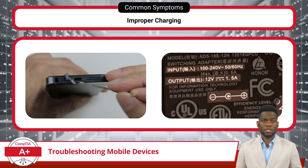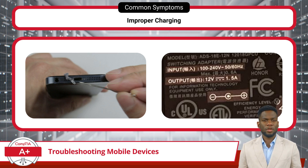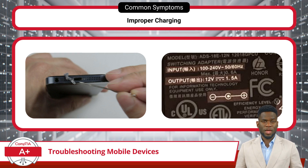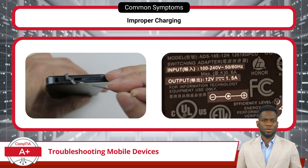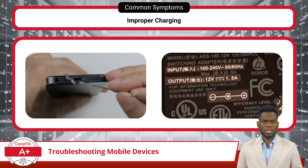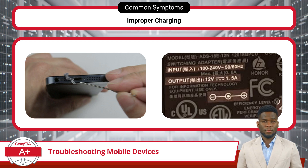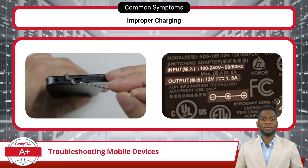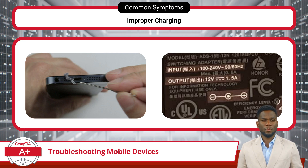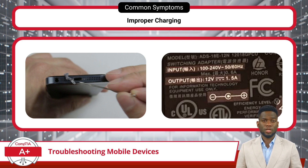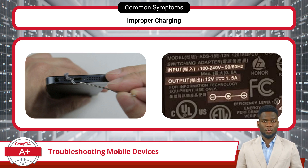Improper charging is a common issue that can stem from various causes. A bad cable presents a significant concern, as damaged or faulty charging cables hinder the flow of electricity from the charger to the device. A poor connection between the cable and the device's port — due to a loose connection or debris buildup — can also cause issues. Additionally, mismatched power ratings between the charger and device can pose risk: insufficient power may result in slow or failed charging, while a higher-rated charger can potentially damage the battery over time.